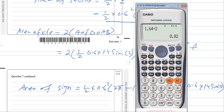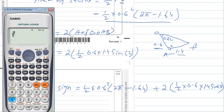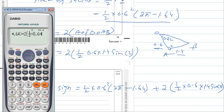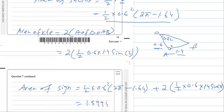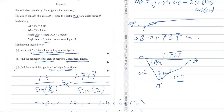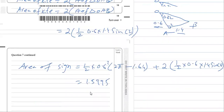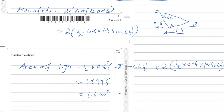Calculating all of that — making sure the calculator is in radian mode — gives 1.5995. Rounding to 2 significant figures, the area of the sign is 1.6 meters squared.